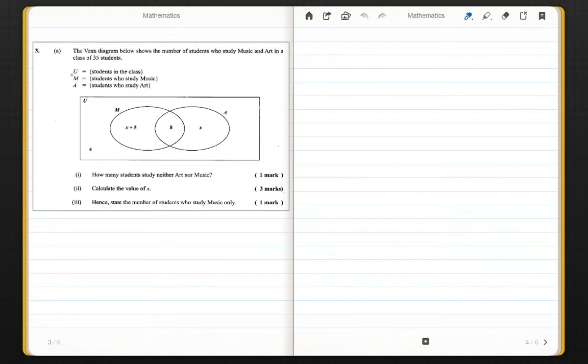U refers to the universal set which is everyone in the class, M is the students who study music, and A is the set of students who study art. In our Venn diagram we have music, we have art, we have a subset which overlaps between music and art, and then we have four outside by itself - four students who don't do music or art.